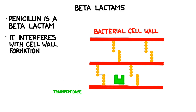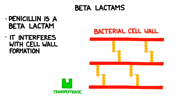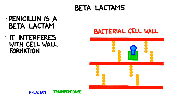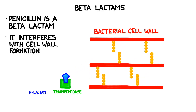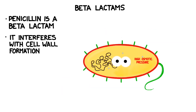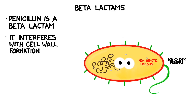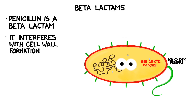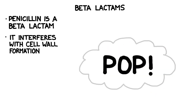Bacterial cell walls are reinforced by an enzyme called transpeptidase, which creates cross-linkages between the components. Beta-lactams attach to the active site of this enzyme, preventing them from functioning properly. Without the cross-linkages, the bacterial cell walls become far less stable. Many bacteria have high internal osmotic pressure, and the weakened cell walls cause the bacterium to expand until finally it pops.